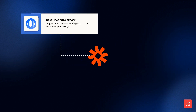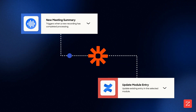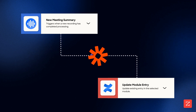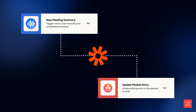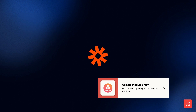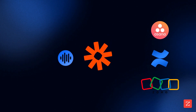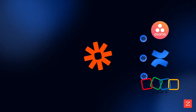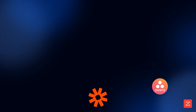Once a new meeting summary is created, an action can be prompted inside software such as Confluence, Zoho, or Asana. With this new update, you're able to send your generative AI meeting summaries to any system of record without the hassle of API setup.